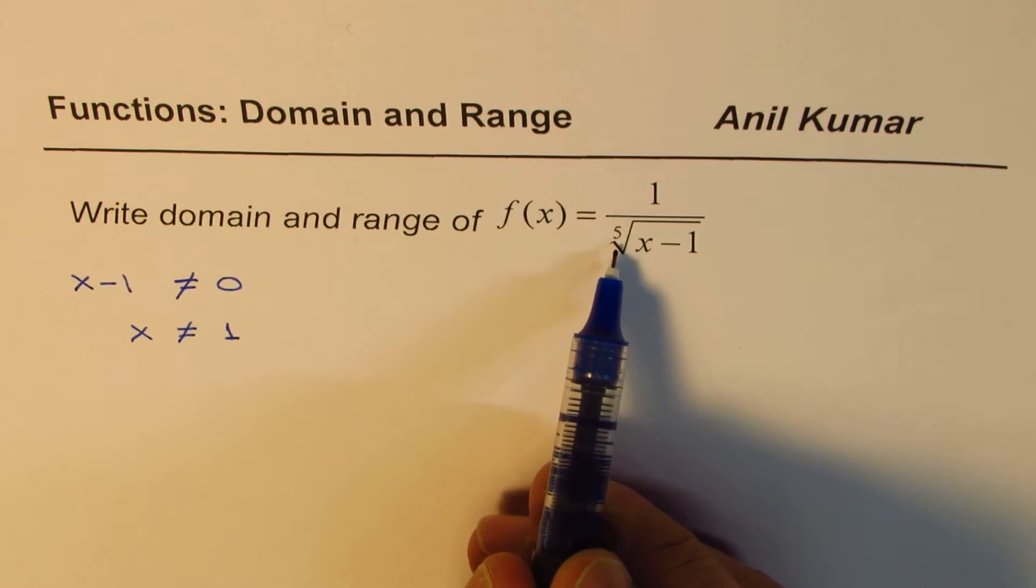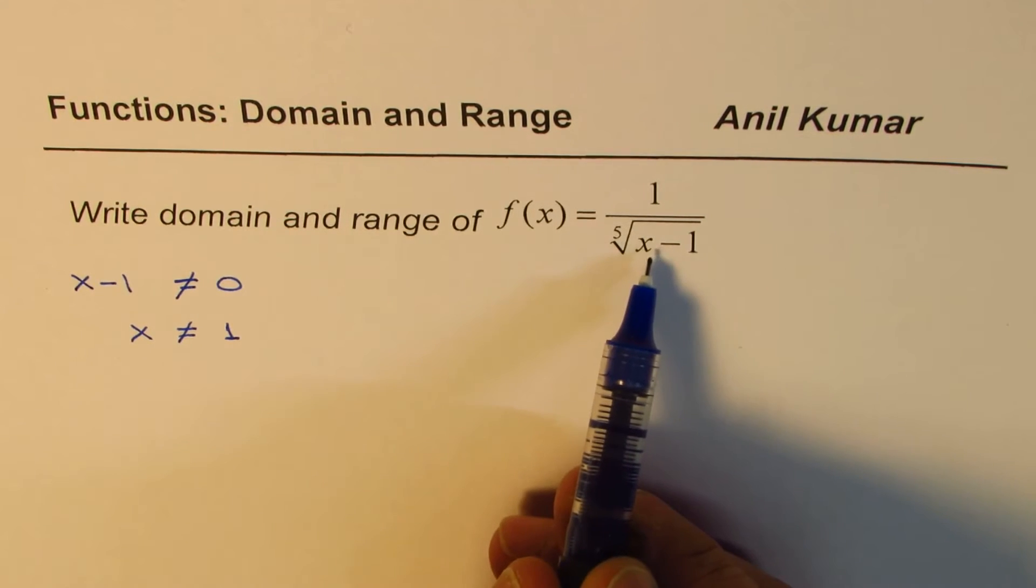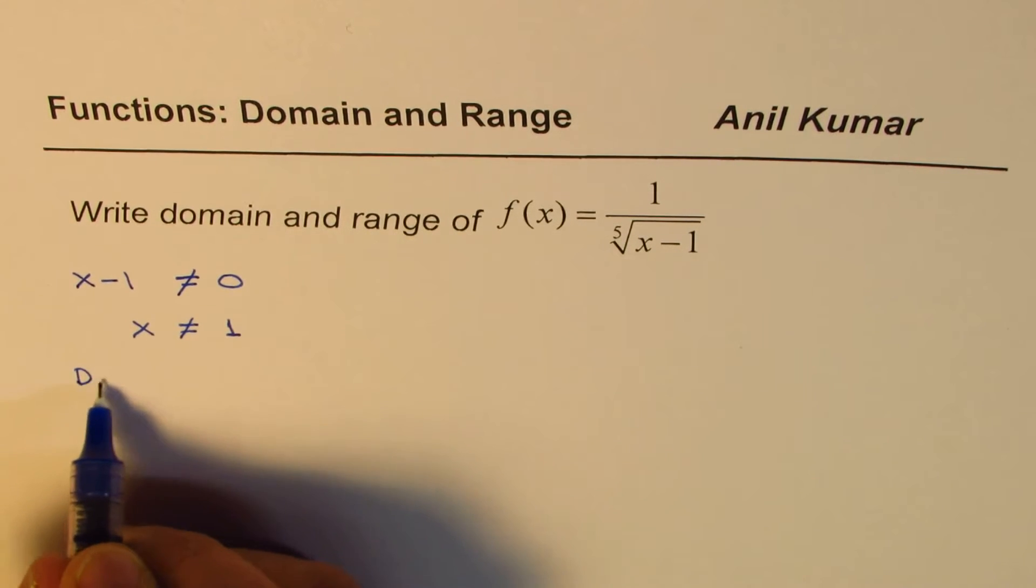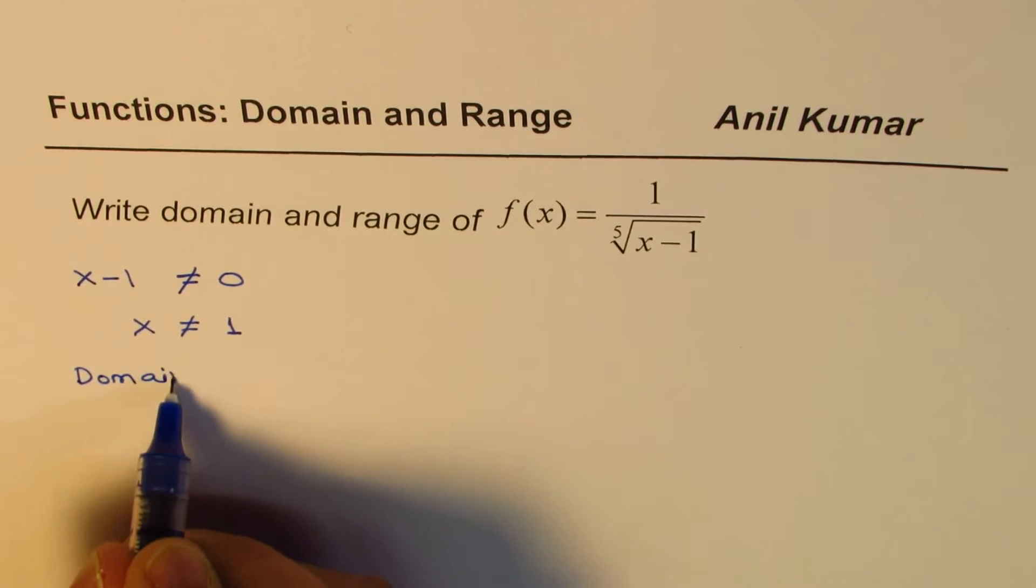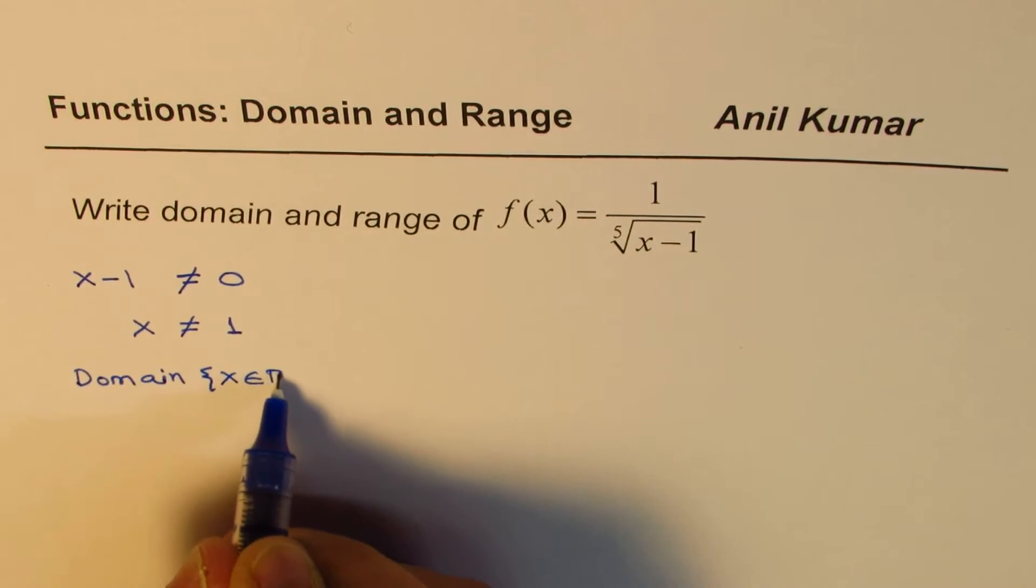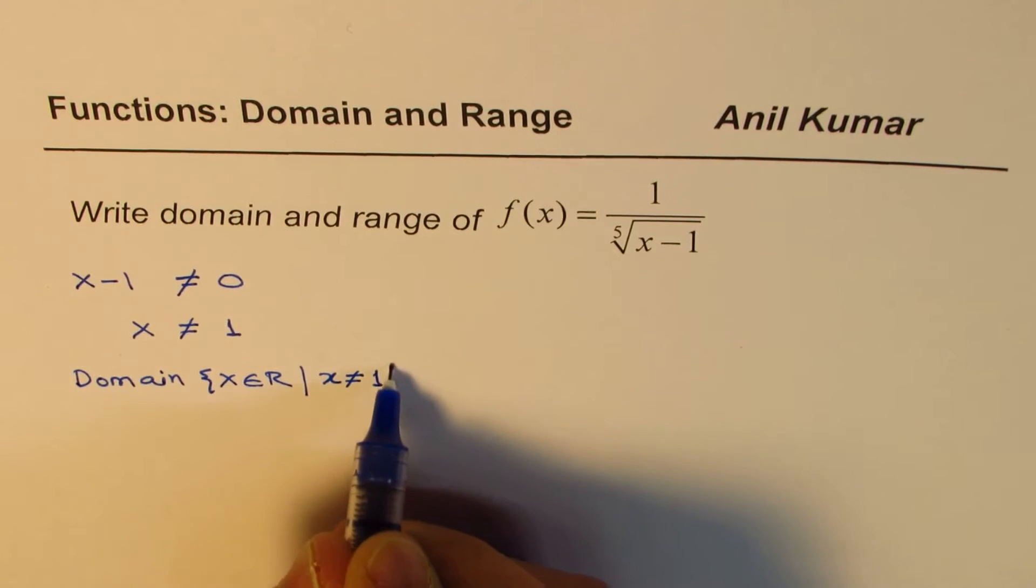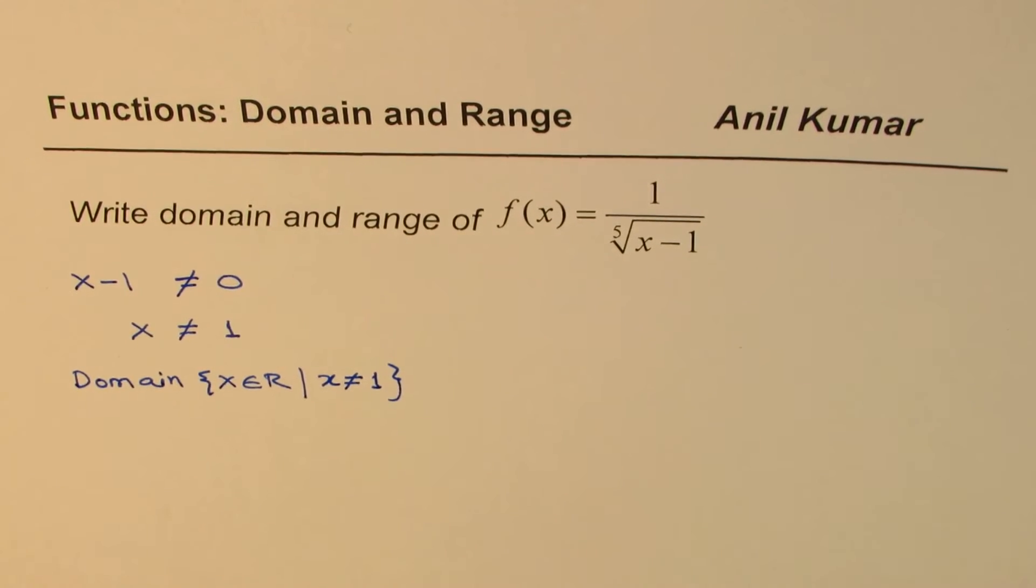Only if these radical roots are even, you have those kinds of restrictions. So that is not a restriction and therefore, we can write for this function that the domain is x belongs to real numbers where x is not equal to 1. So that becomes the domain of this function.